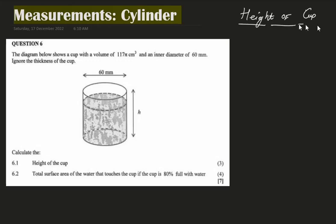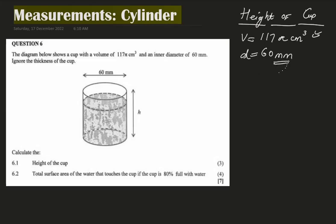Please excuse my handwriting today as well. Now let's look at the factors we have. First, the volume is 117π cubic centimeters — the volume is in cubic centimeters. Then they gave us a diameter of 60 millimeters. Now, the diameter is in millimeters, which will help me find the radius, but I want my radius to be in centimeters, because my volume is already in cubic centimeters.